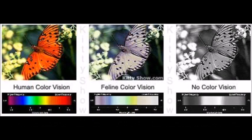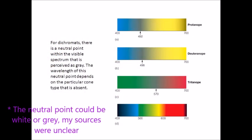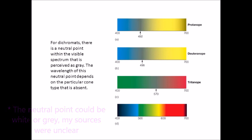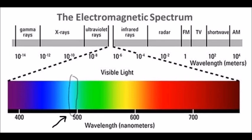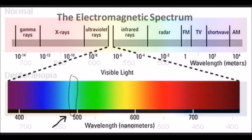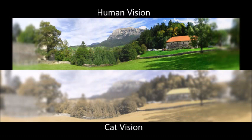Cats probably perceive what we see as red as shades of yellow. One key feature of dichromacy is the presence of a neutral point where light of a certain wavelength appears white instead of colored. A neutral point has been found in cats at around 505 nanometers, which would appear bluish-green to a trichromat human. Wavelengths smaller than the neutral point appear bluish, while wavelengths larger would appear yellowish. The cat neutral point is very close to the neutral point of people with red-green colorblindness, which is 500 nanometers, implying that cat color vision is similar to that of red-green colorblind people.